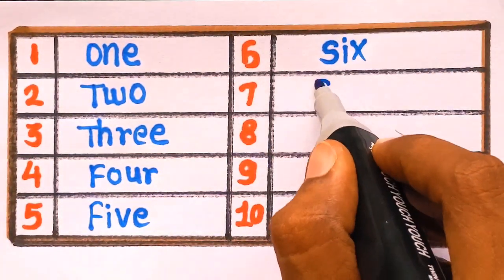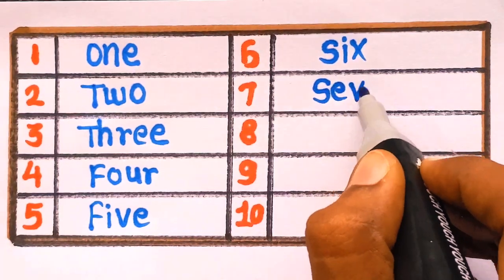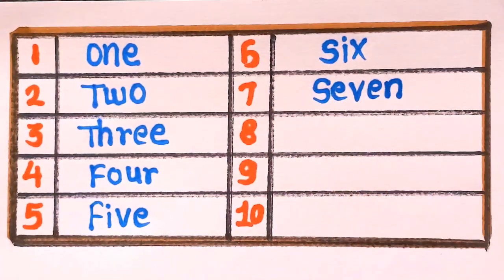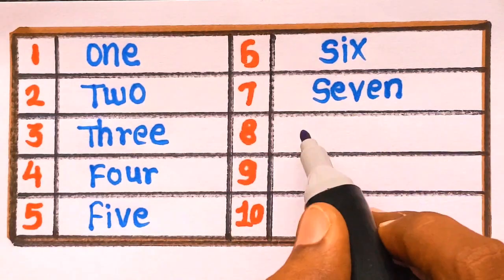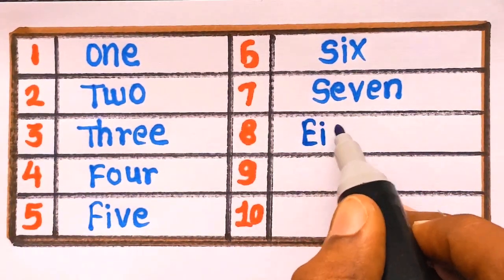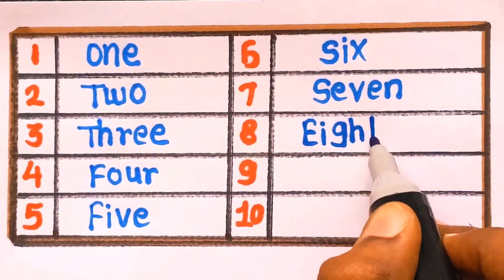Seven. S-E-V-E-N. Seven. After number 7, next is number 8. E-I-G-H-T.